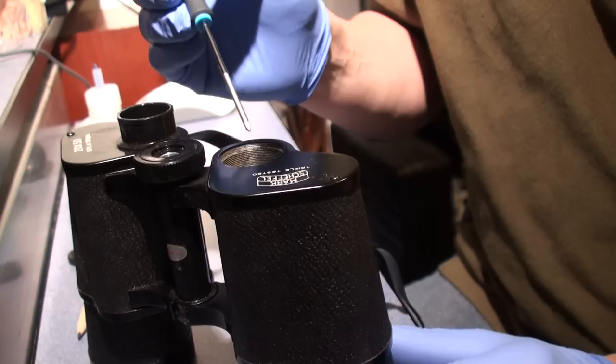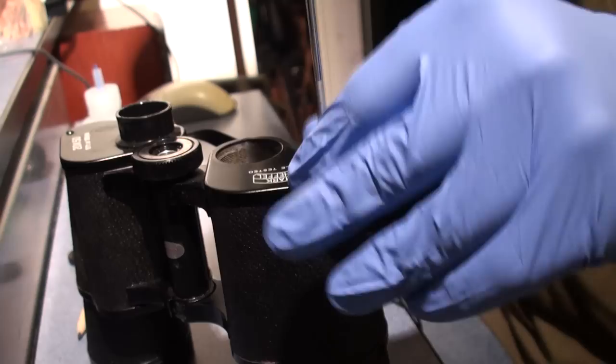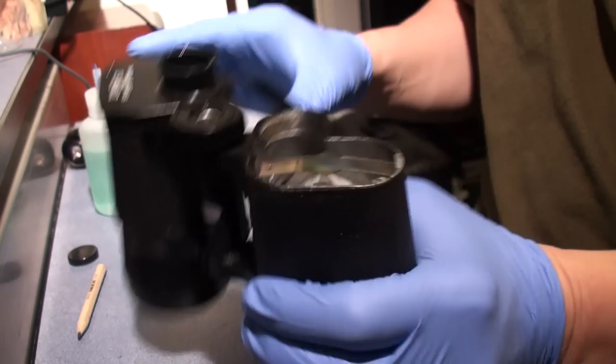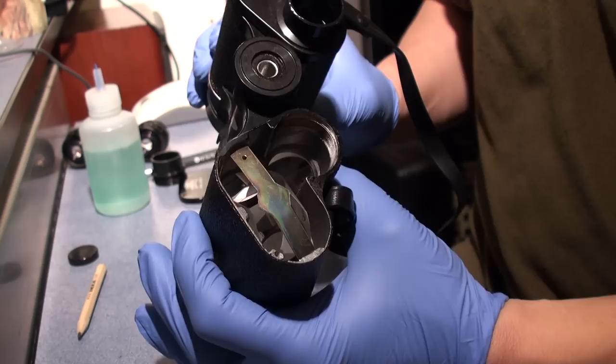Now you need to take the prism cover off. This is the prism cover. So, screwdriver, remove the screw. Put that to one side. And that exposes the prism and the prism clip.